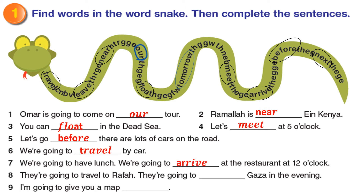Number 6: We are going to travel — buy car. Number 7: We are going to arrive at the restaurant at 12 o'clock. Number 8: They are going to leave Gaza in the evening. I am going to give you a map tomorrow. Now make sure that you write the correct answers — write carefully and neatly.